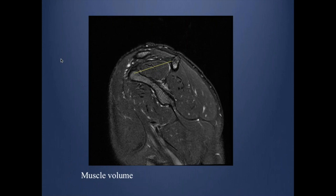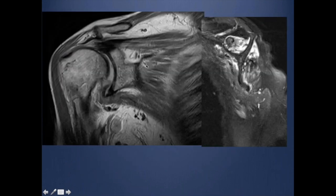How to assess muscle volume: there is a grading system, but generally, if you take the sagittal and draw a line between the acromion and the coracoid, the muscle belly should be above this line. If you look carefully here and draw the line, the muscle belly is clearly low and you can see fatty infiltration.